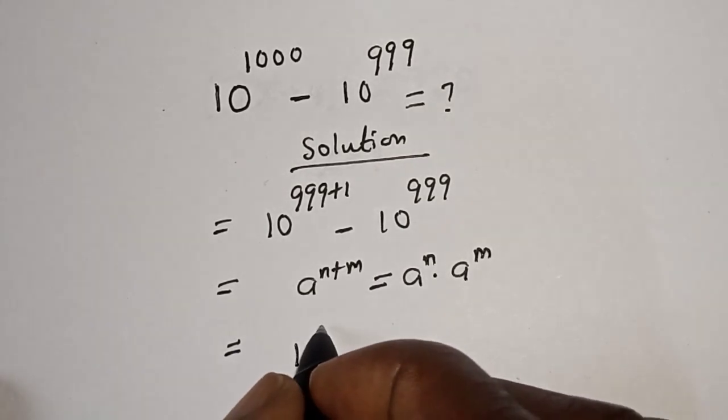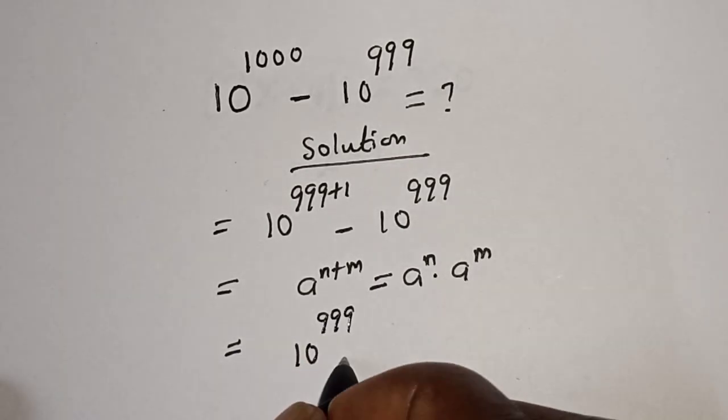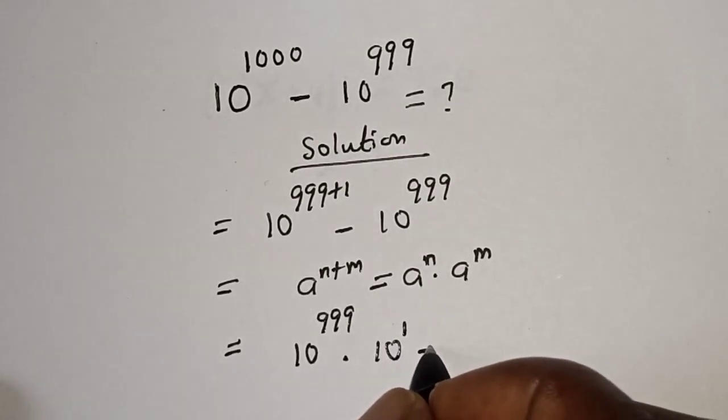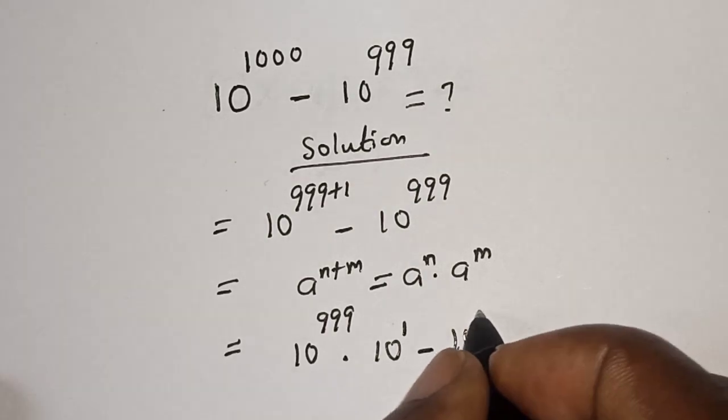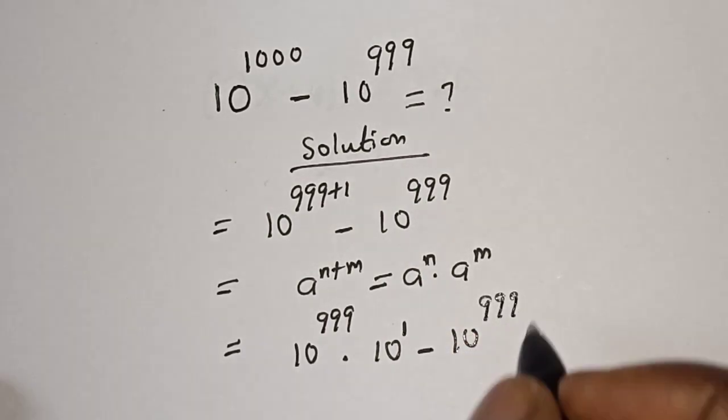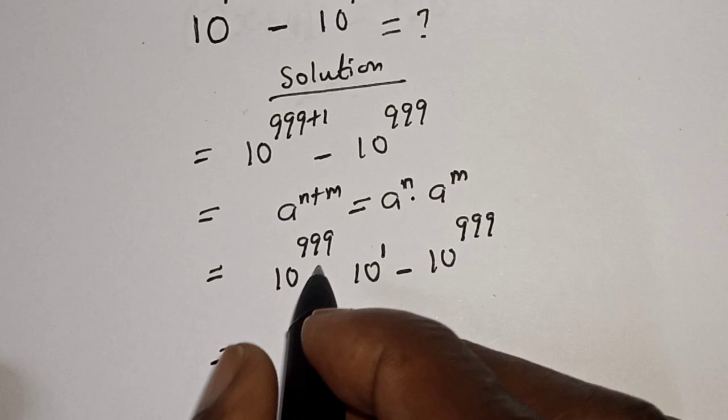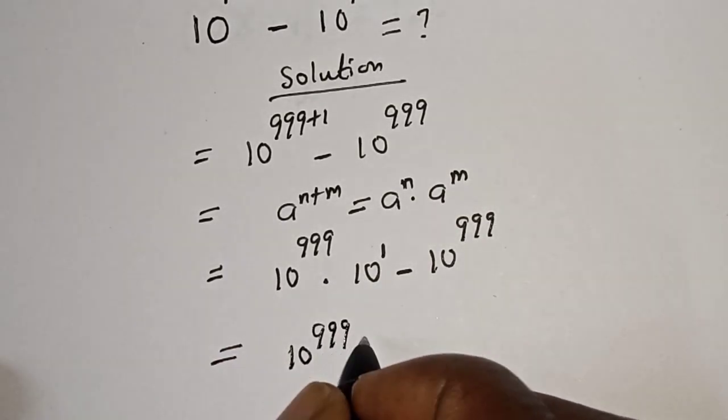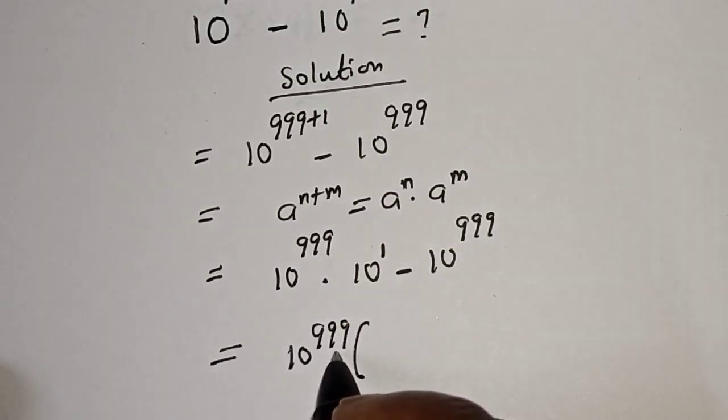This equals 10 raised to power 999 multiplied by 10 raised to power 1, minus 10 raised to power 999. 10 raised to power 999 is common, let's factor it out.